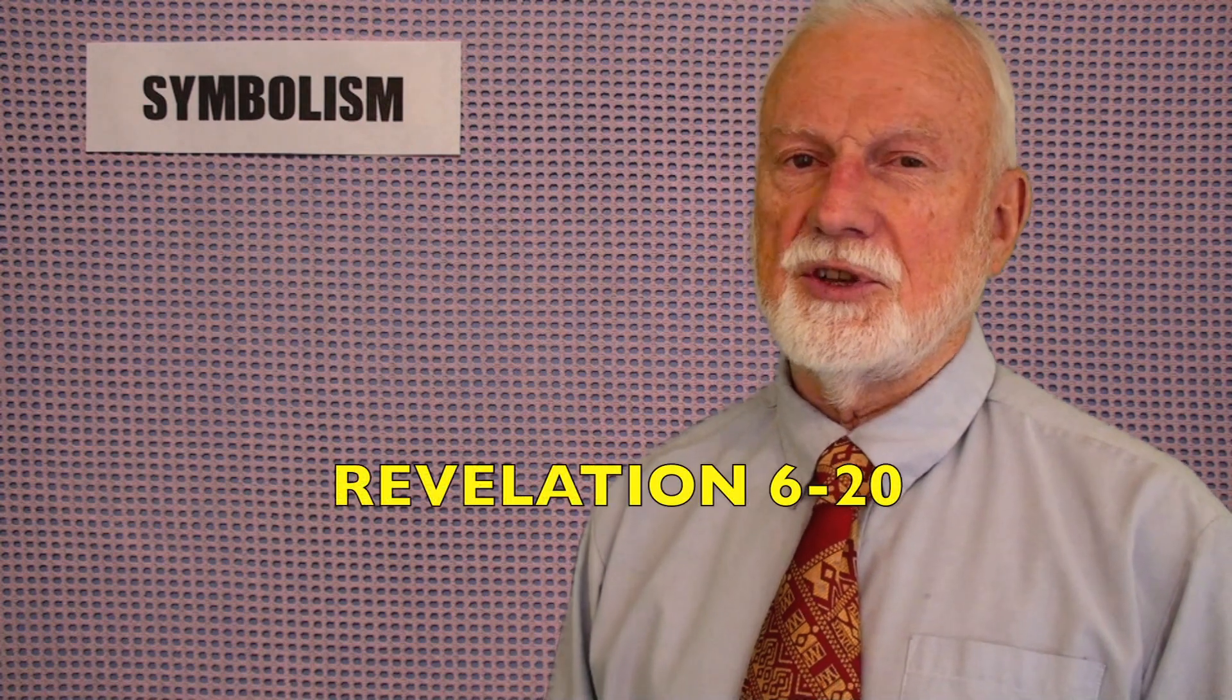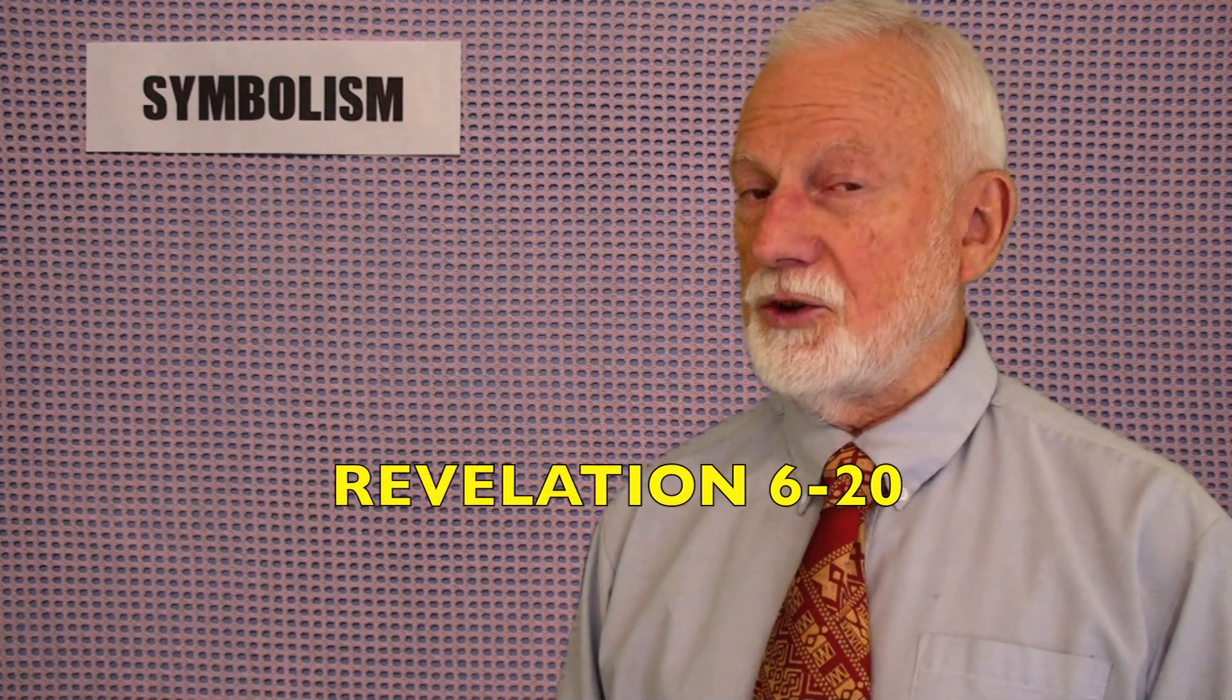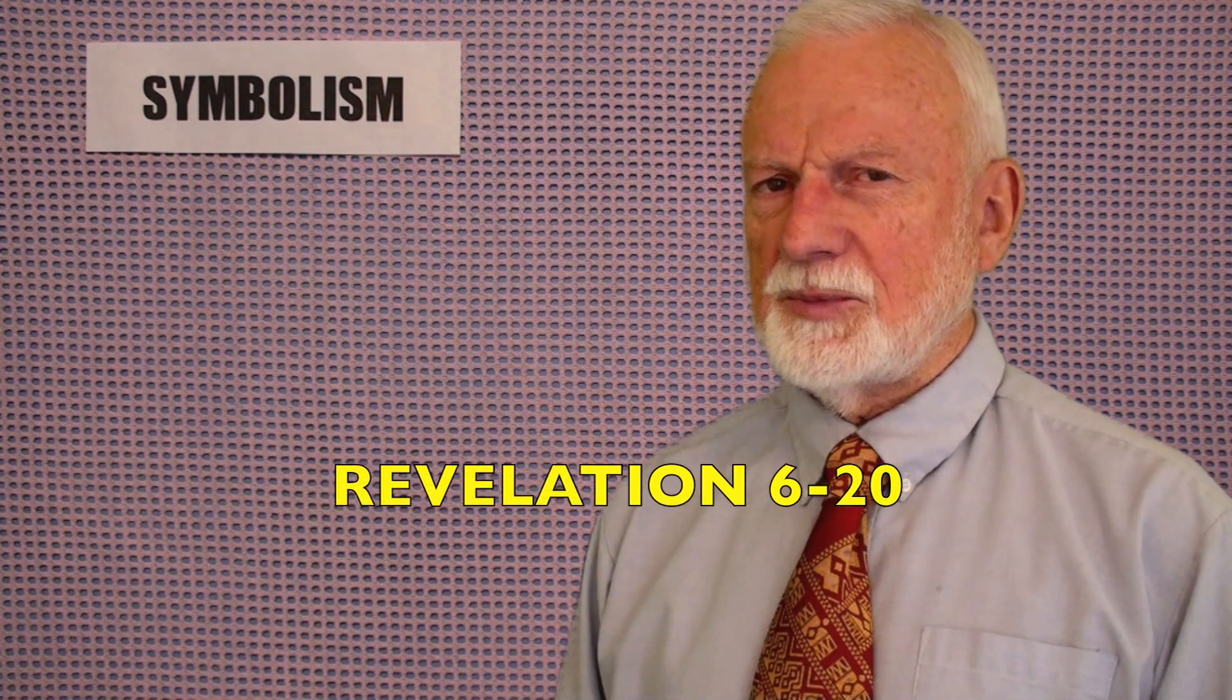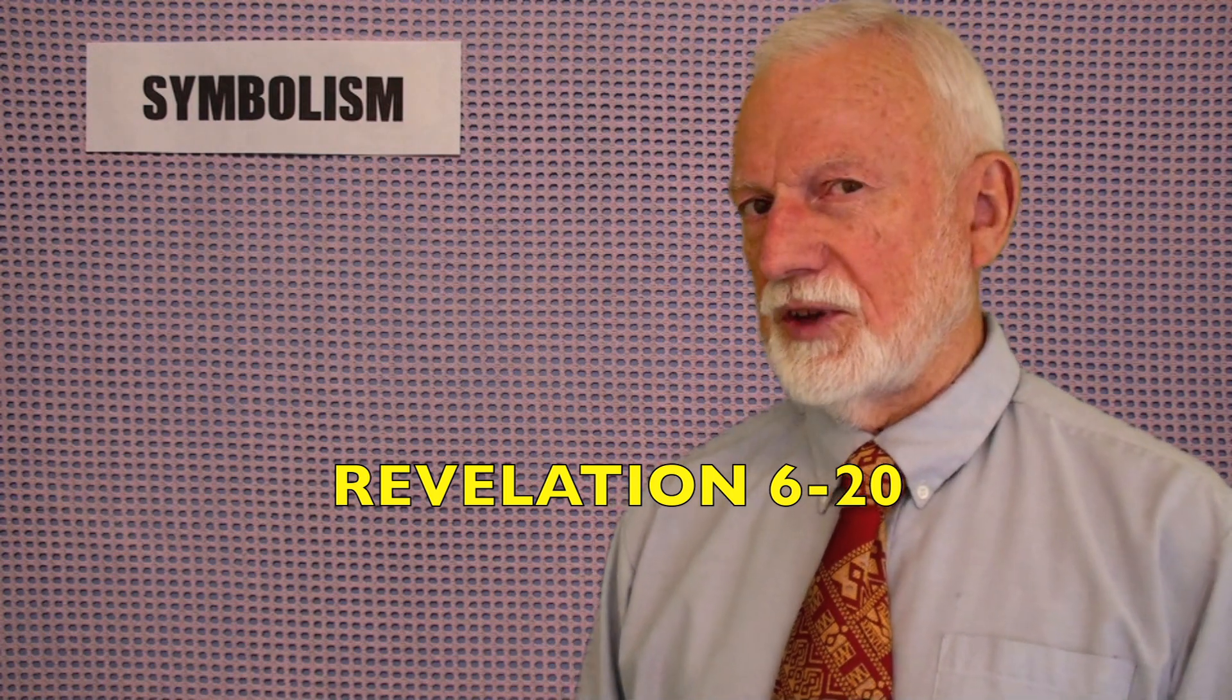Now the first of these 7 rules is symbolism. You must understand that the symbolic interpretation of End Times Bible prophecy takes precedence over the literal interpretation. For example, in the book of Revelation, there are 15 End Times chapters, that is chapters 6 through 21. In those chapters, the symbolic interpretation takes precedence over the literal.